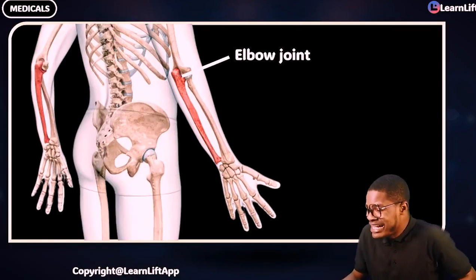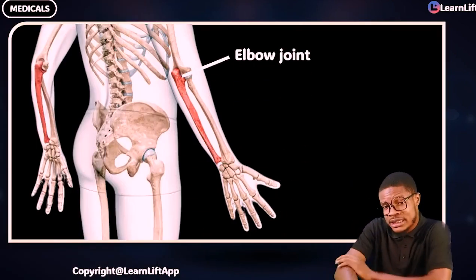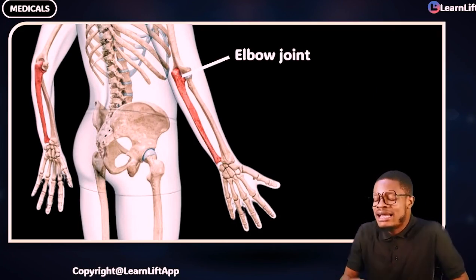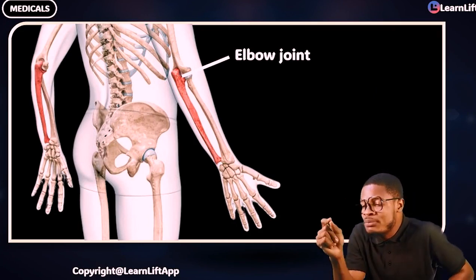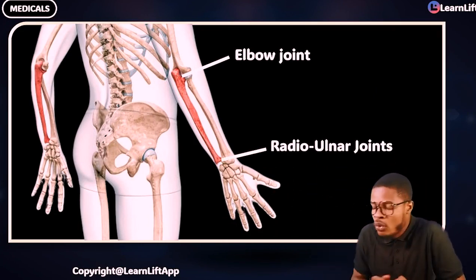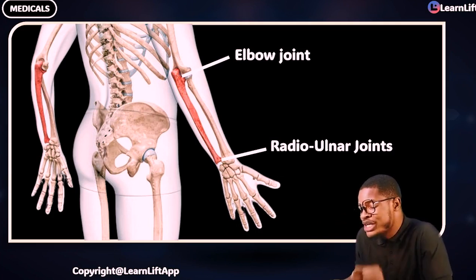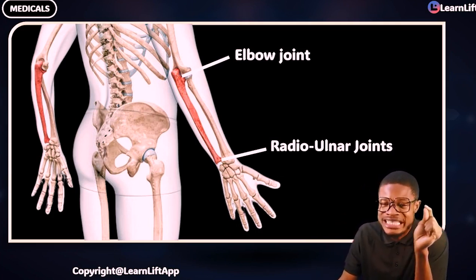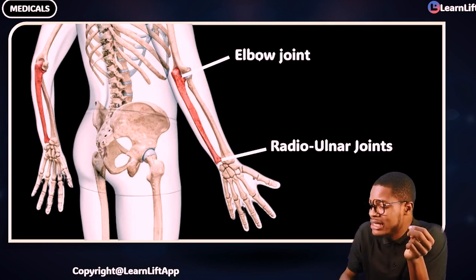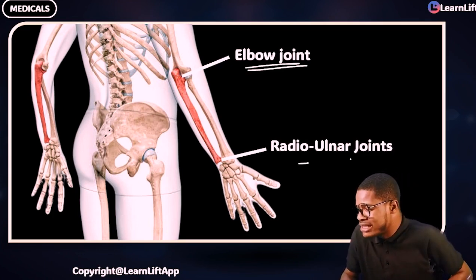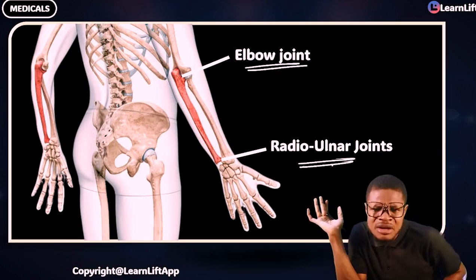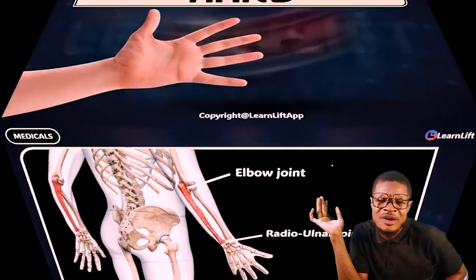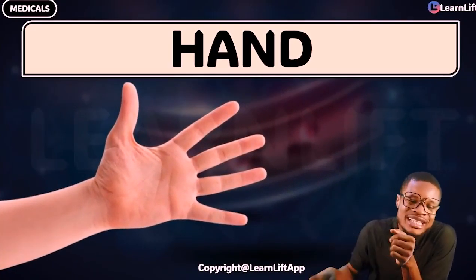This is the elbow joint, and the joint forming between the radius and the ulna is the radio-ulnar joint. So the forearm or anti-brachium has two joints: the elbow joint and the radio-ulnar joint.